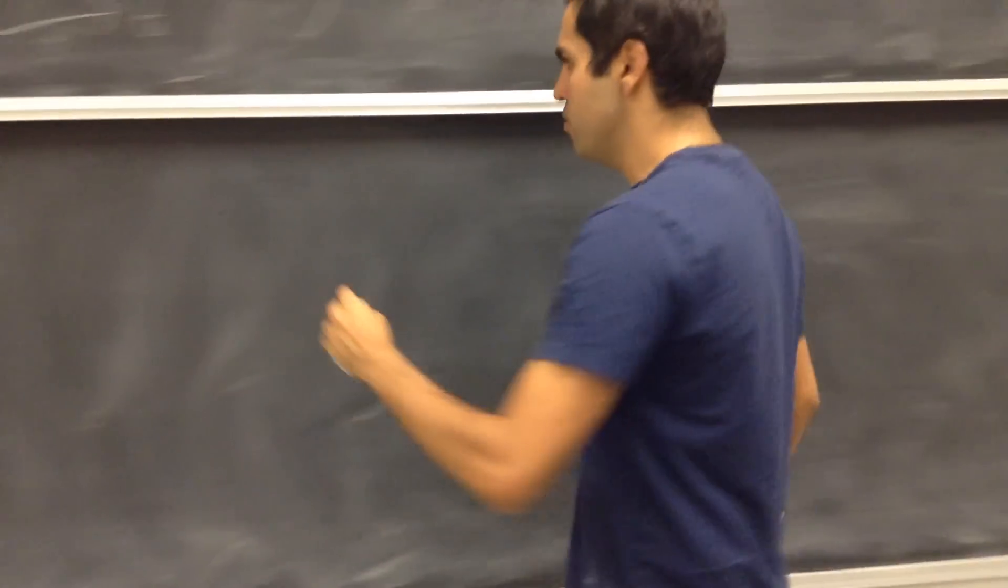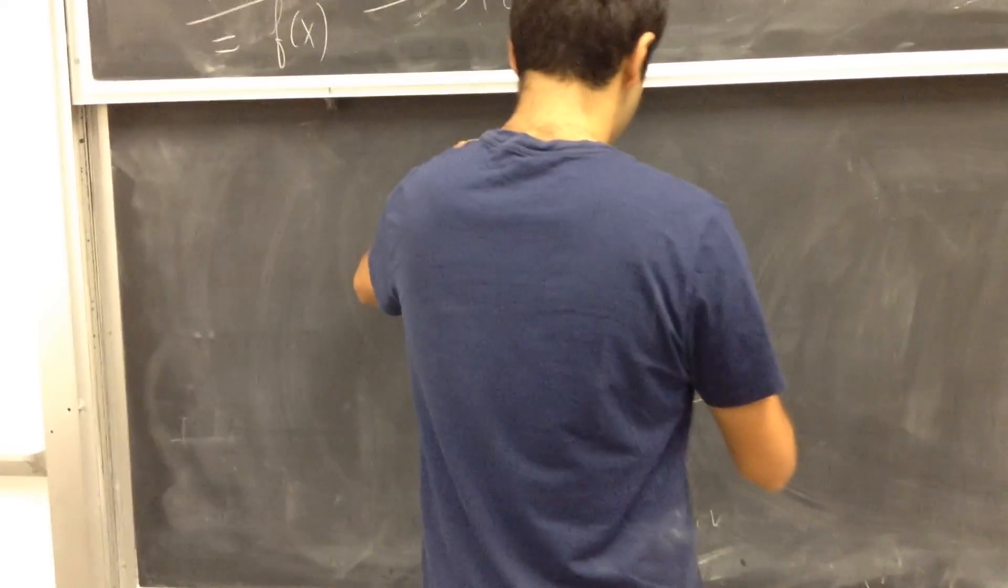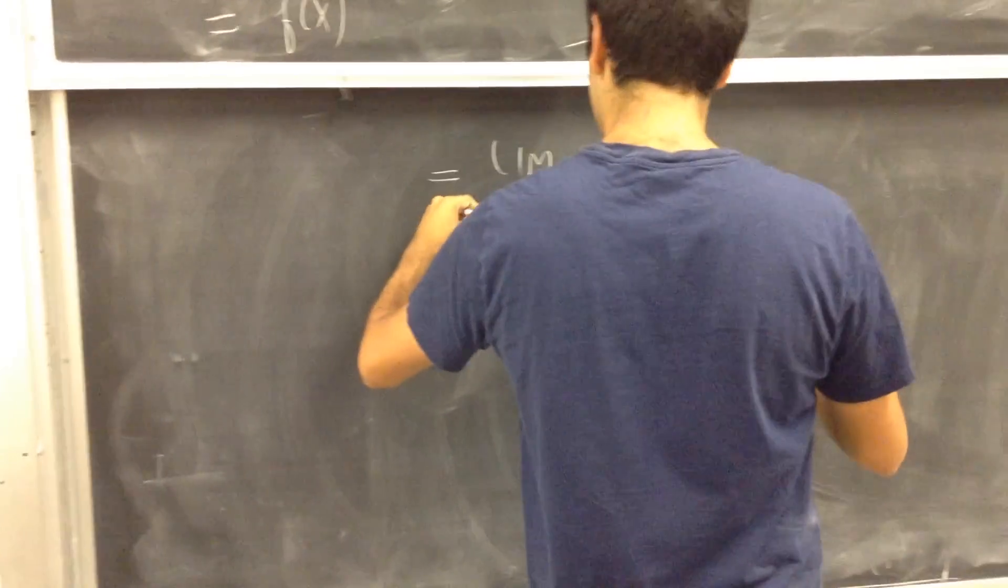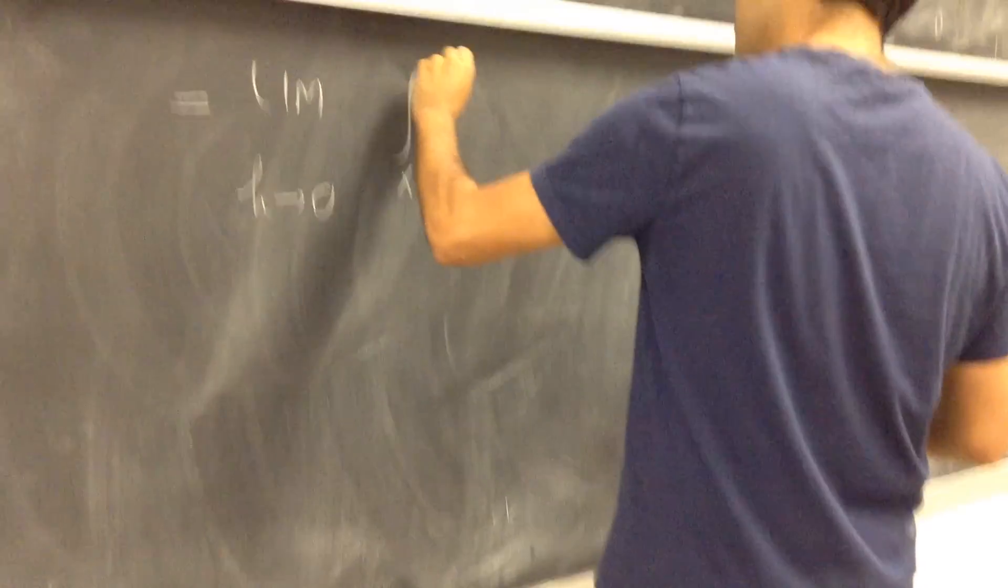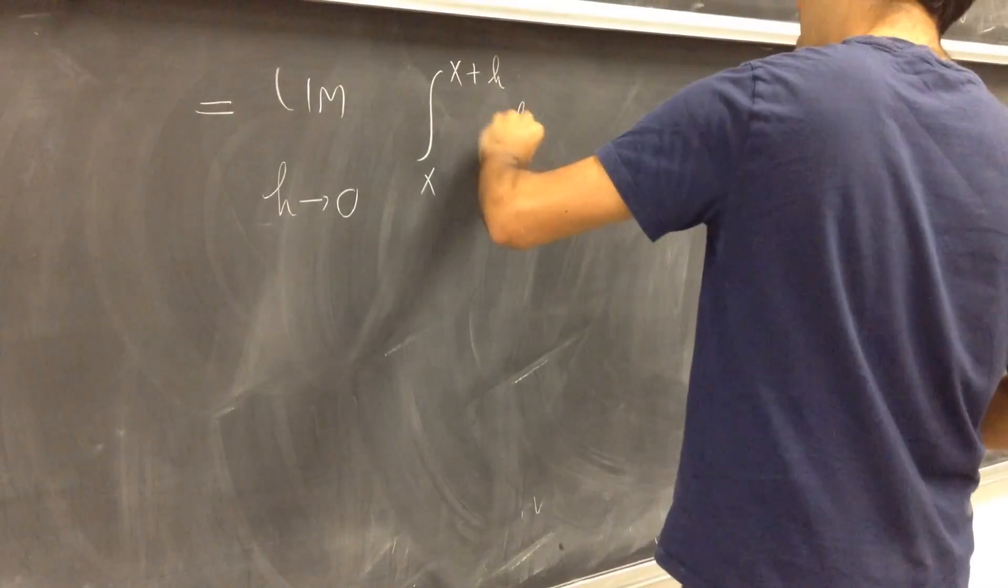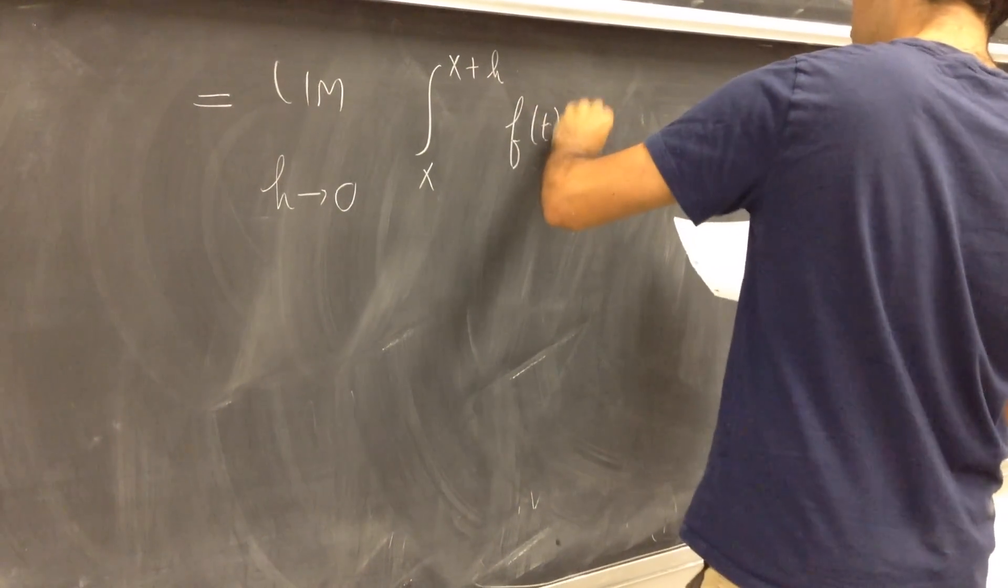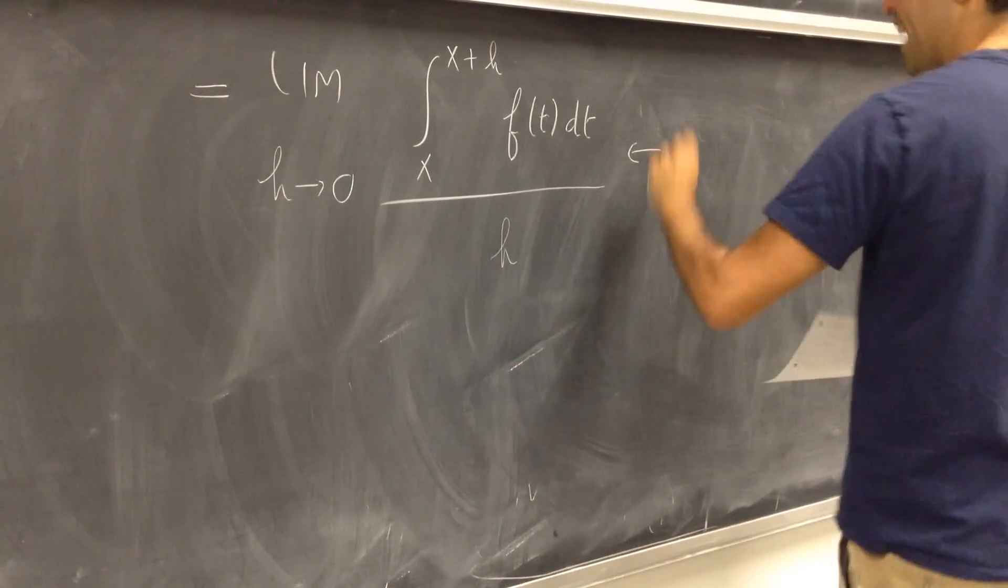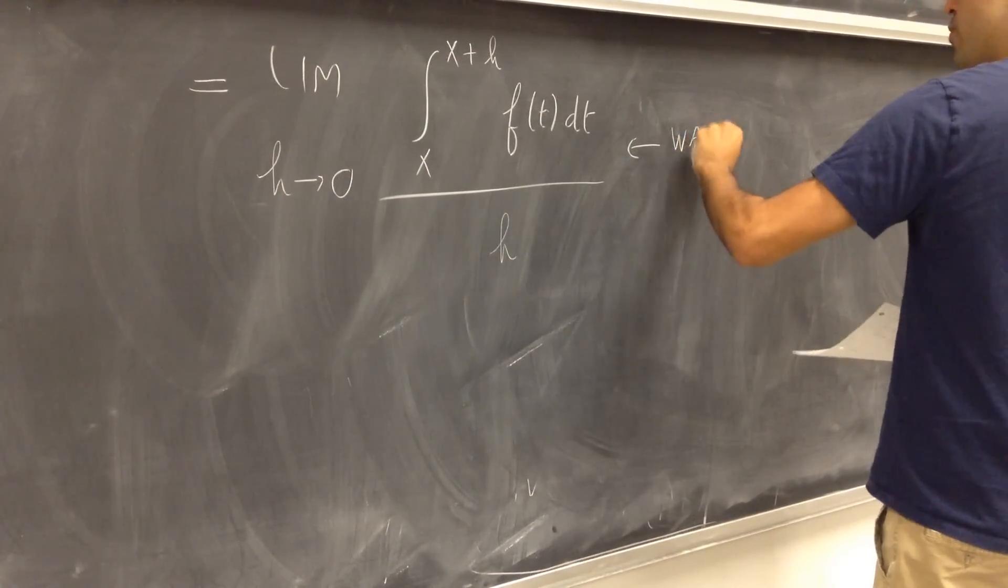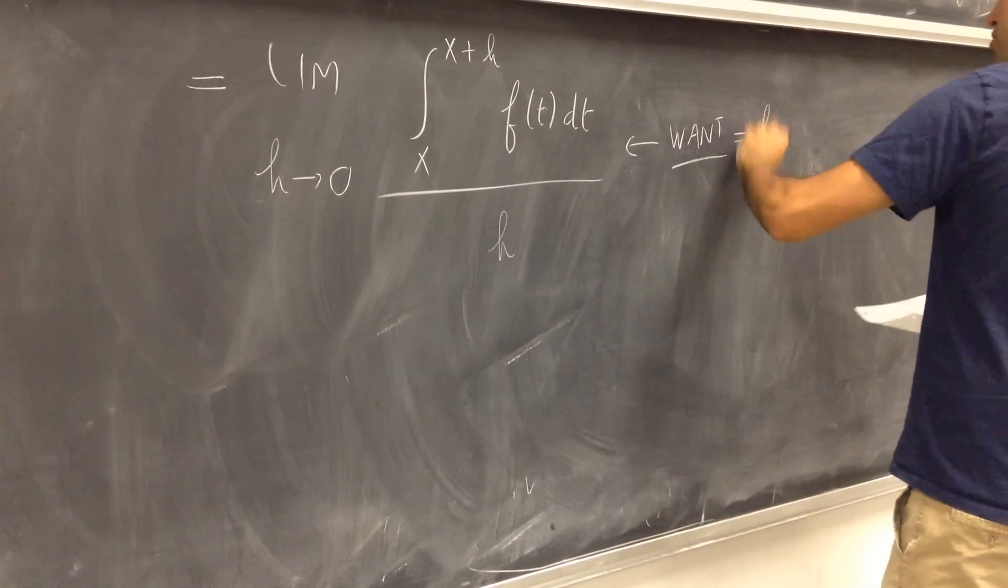Suppose you have this point a, you have the point x, and point x plus h, and you have the function f here. Well, the integral from a to x plus h, it's precisely this. But from this area, you're subtracting the area from a to x of f of t dt.